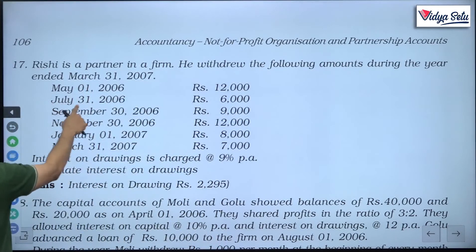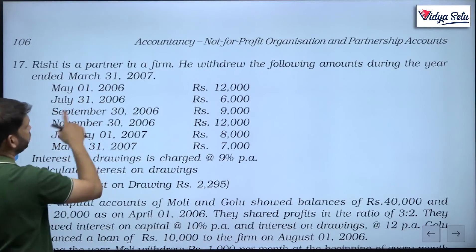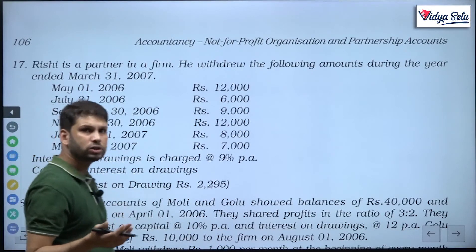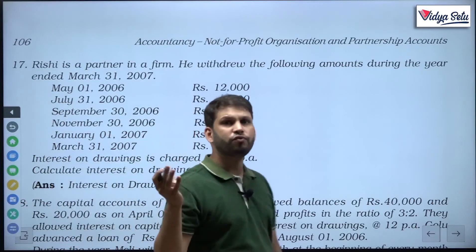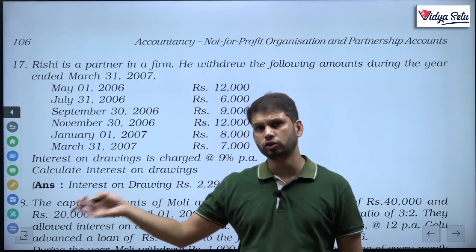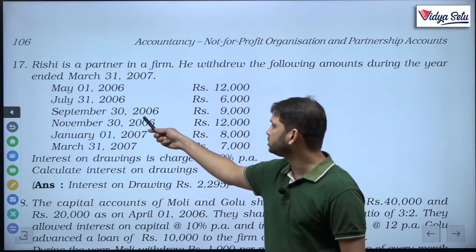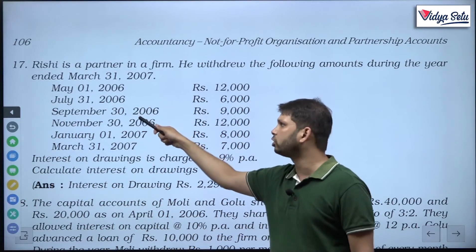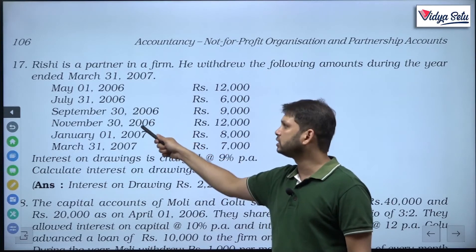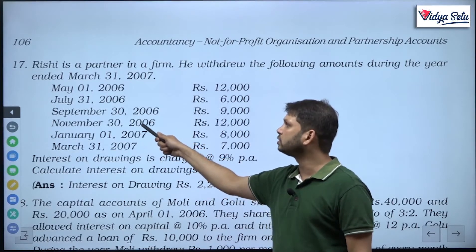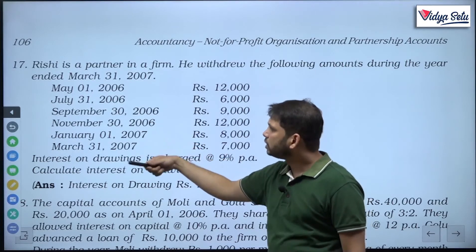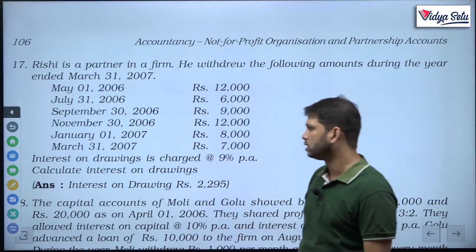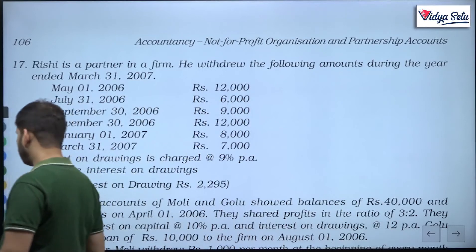Accordingly, when he withdrew on 31st July, that is 8 months' interest — because the money was used by him from 1st August to 31st of March. The money withdrawn on 30th September could only be used from 1st October, so 6 months. The money withdrawn on 30th November — 4 months. December to March — 3 months. And the last withdrawal — 0 days. So accordingly we charge our interest.